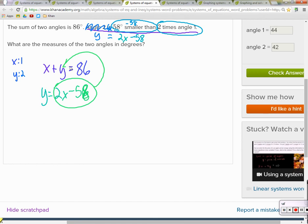So Y is that. So that now becomes X plus 2X minus 58. What we used to call Y is now 2X minus 58. So 86. That's all for X. 3X. Add 58 to both sides. So you get 144. 58? What? You just said 46.